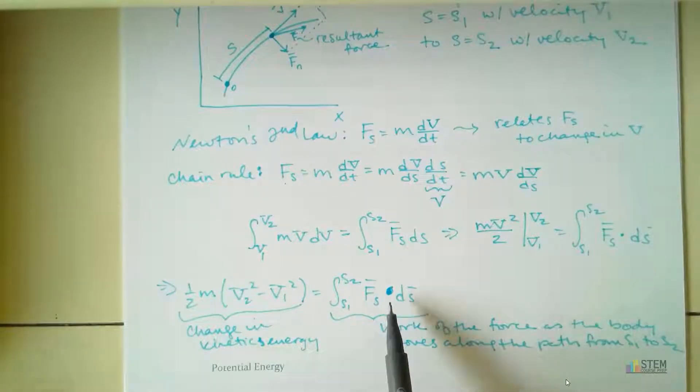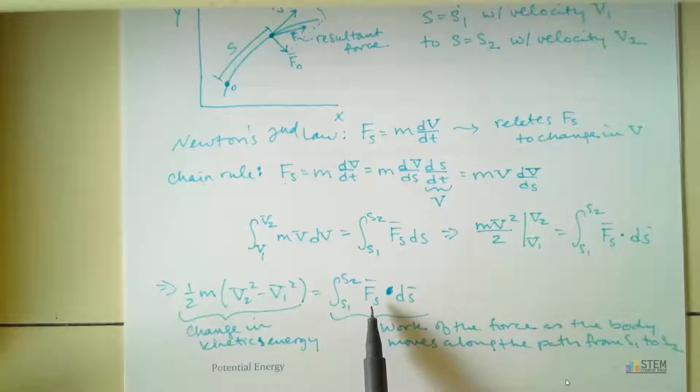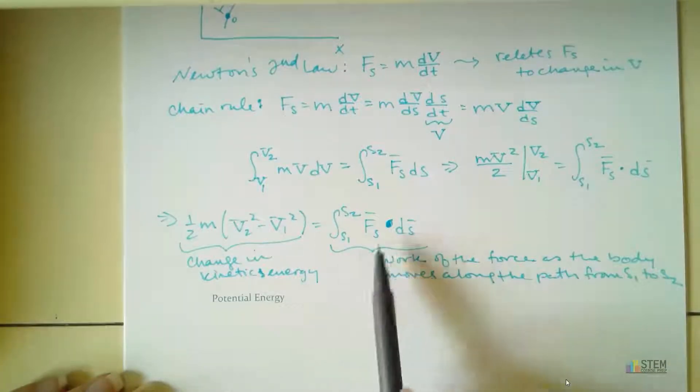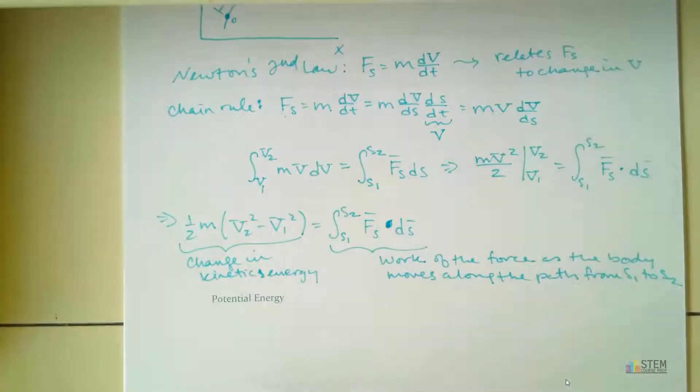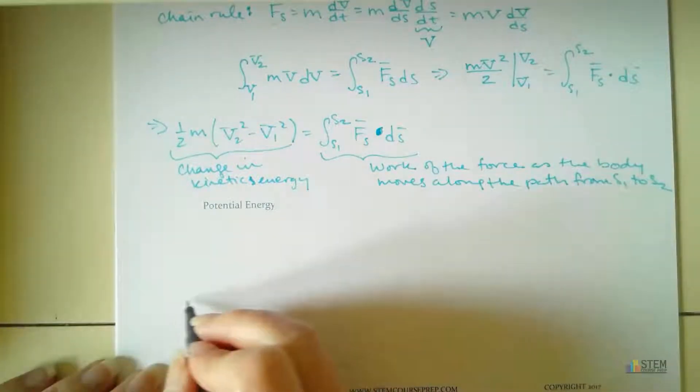So now what this gives us right here, this is our change in kinetic energy. So you've probably seen one half mv squared, that's your kinetic energy term. Now this on the right-hand side, this is work. So this is work of the force as the body moves along the path. Next, let's go over potential energy. This is something you should have also already seen.